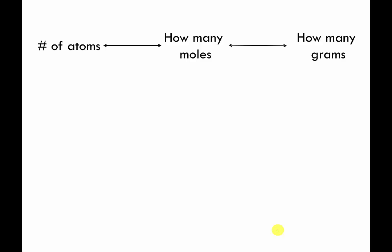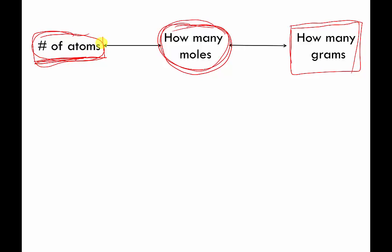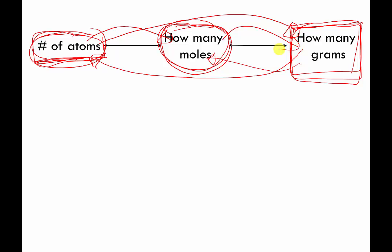What we've been doing in the past couple of videos is interconverting between counting number of atoms, counting number of moles (which are just groups of atoms), and using the periodic table to convert moles into mass. If I tell you how many atoms you have and give you a periodic table, you can figure out how much it weighs. If I tell you how much a pile of atoms weighs and give you the periodic table, you can figure out how many atoms there are. The easiest path is to convert to moles first.